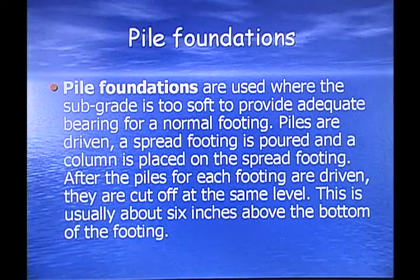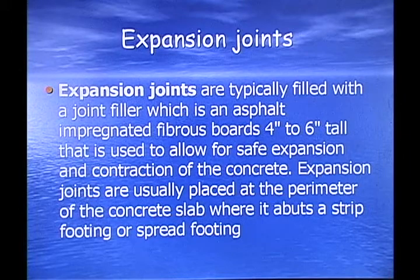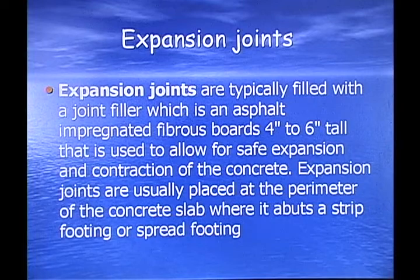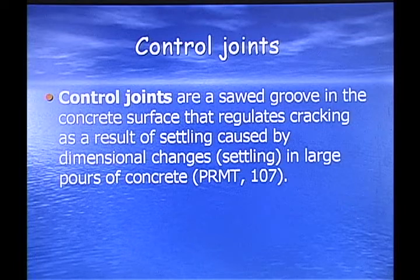Expansion joints are typically filled with a joint filler, which is an asphalt-impregnated fibrous board 4 inches to 6 inches tall, used to allow for safe expansion and contraction of the concrete. Expansion joints are usually placed at the perimeter of the concrete slab where it abuts a strip footing or spread footing. Expansion joints are also a sawed groove in the concrete surface that regulates cracking as a result of settling caused by dimensional changes in large pours of concrete.